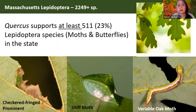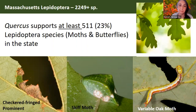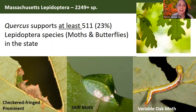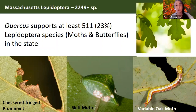For moths, the numbers are extremely striking in diversity. Massachusetts supports at least 511 species of moths and butterflies — about 23% of the moth and butterfly biodiversity that's out there. These species have fantastic colors and beautiful morphologies, like the checkered fringe prominent, the skiff moth, and the variable oak moth. Although they eventually turn into moths and butterflies, they spend the majority of their life cycle relying on the trees they feed on, making oak trees incredibly important for supporting those insect populations.